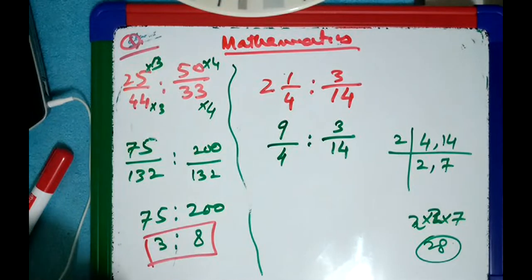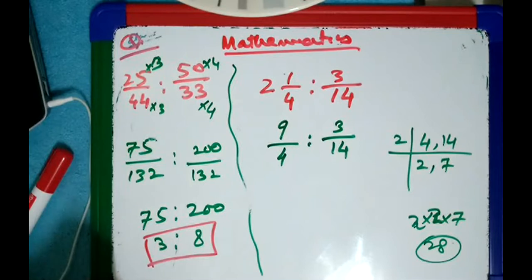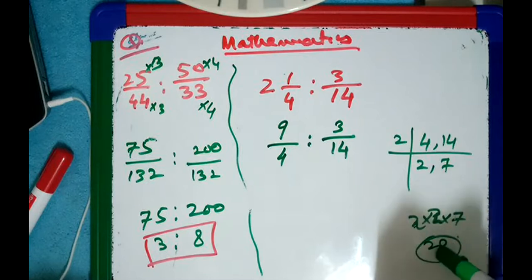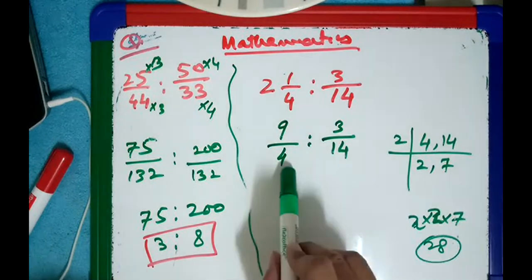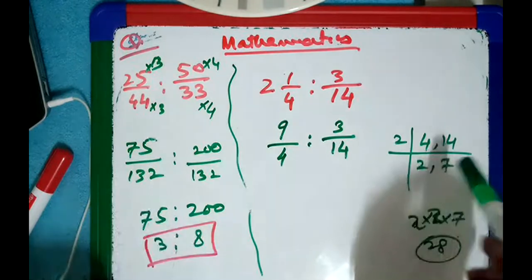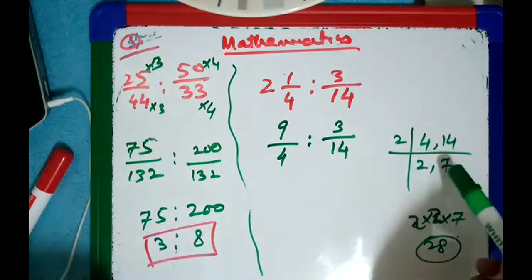Got it? Not 3. Did you get this? Can you see this? Yes. So the answer is 28. You make this. Oh, I did a mistake. No — 2 × 4 = 4, 4 × 7 = 28.